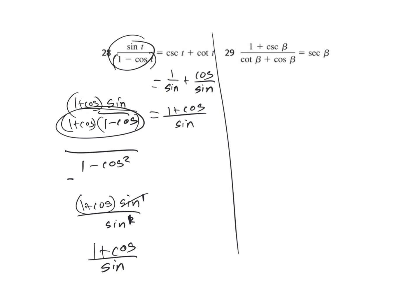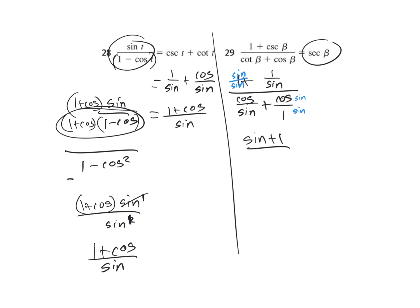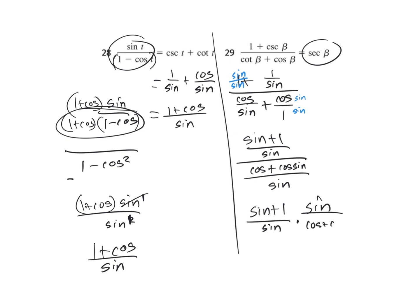Number 29: all we have on the right is secant — that doesn't help much for now. Start with the left side: 1 plus 1 over sine, that's cosecant, and cosine over sine plus cosine. Get a common denominator on top by multiplying by sine over sine, and on the bottom also multiply by sine over sine. On top: sine plus 1 all over sine. On bottom: cosine plus cosine sine all over sine. Keep change flip: sine plus 1 over sine times sine over cosine plus cosine sine. Sines reduce. Factor out a cosine from the bottom: 1 plus sine, which reduces with the top. Left with 1 over cosine, which is secant. Check.